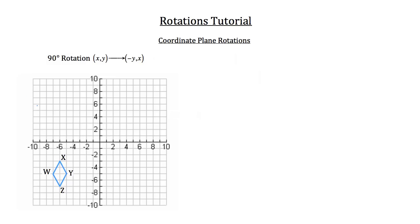Now, in geometry, if we were going to rotate rhombus W, X, Y, Z 90 degrees, what would happen with the x and y coordinate of each of the points W, X, Y, and Z is that they would flip — so y would come before the x — and the y would actually be negative. So let me show you what I mean by that.